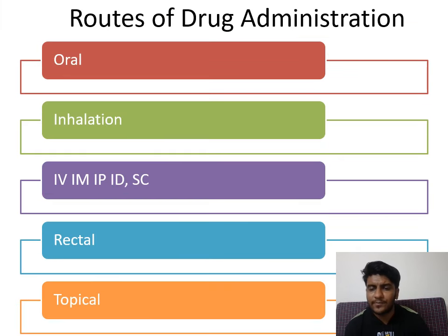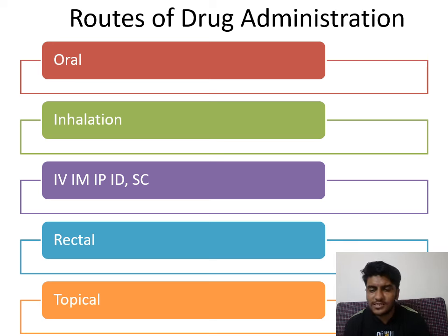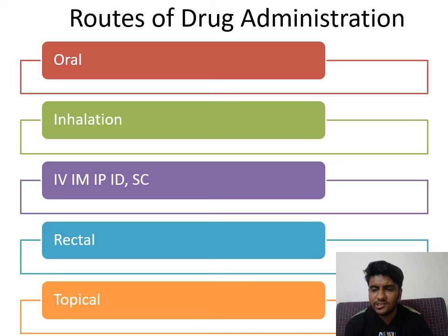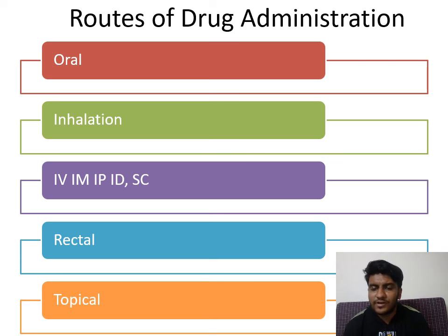Different routes of drug administration include oral gavage needle — the gavage needle is used to feed or tube-feed the particular animal. Inhalation — the nasal technique for pulmonary drugs. Then IV, IM, IP, ID, SC — subcutaneous, intravenous, intramuscular, intraperitoneal, intradermal — these are different routes with different angles and different requirements.